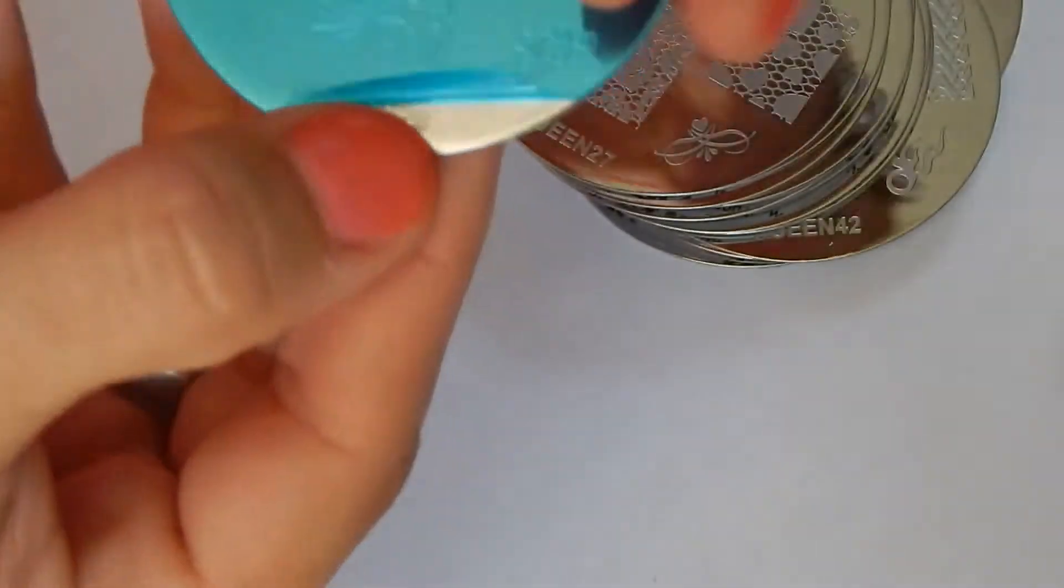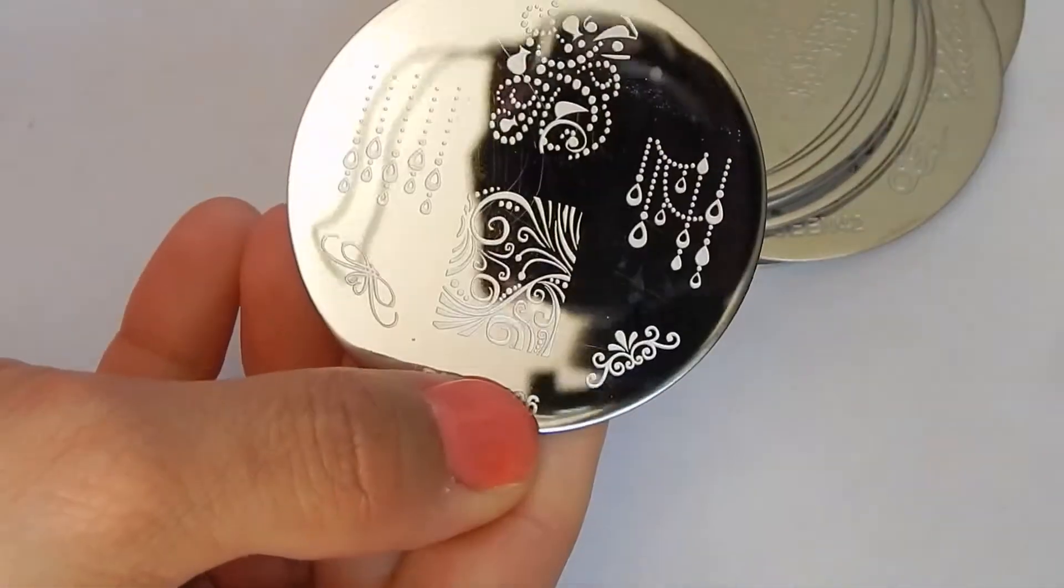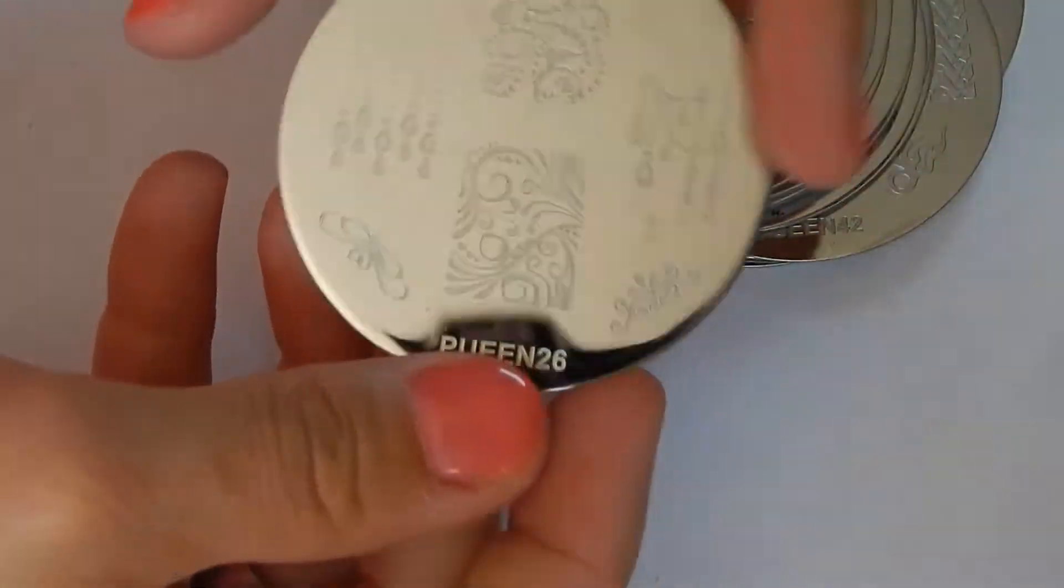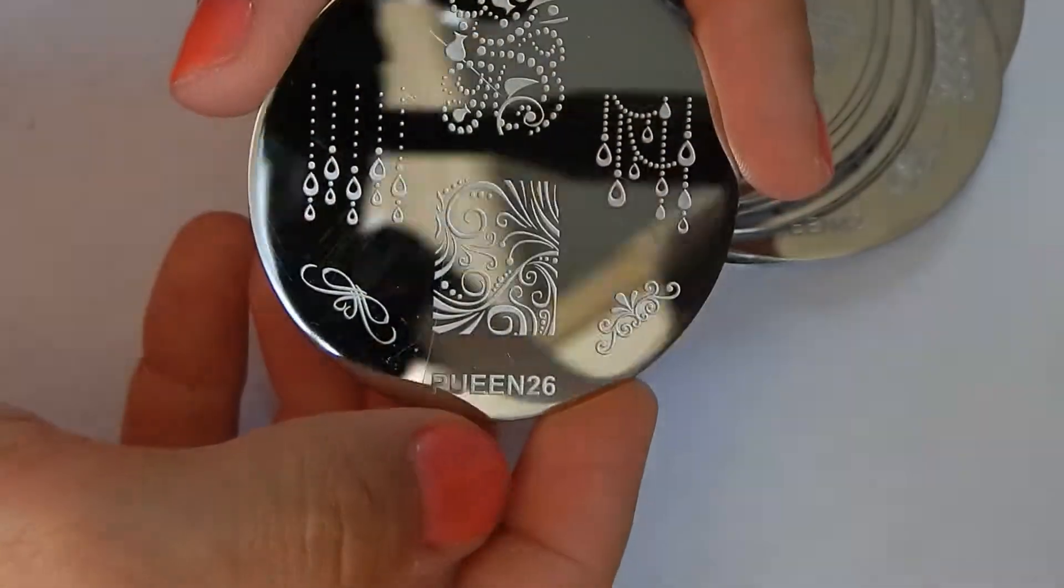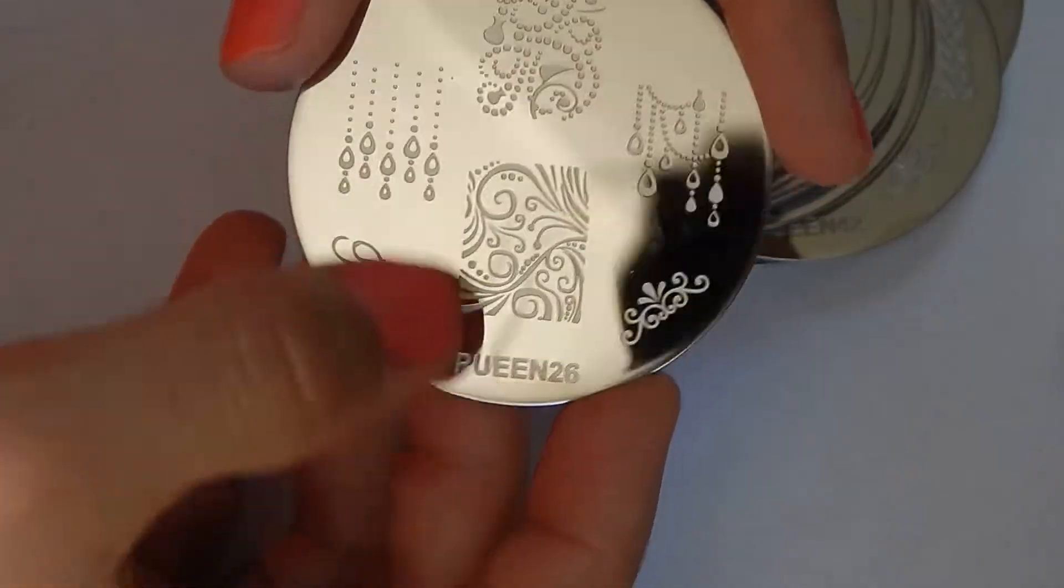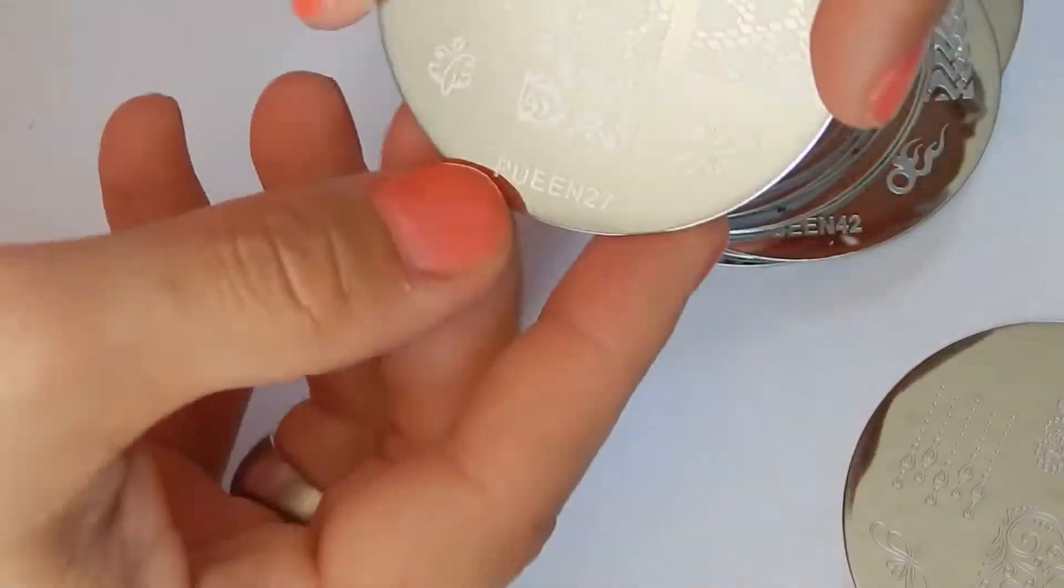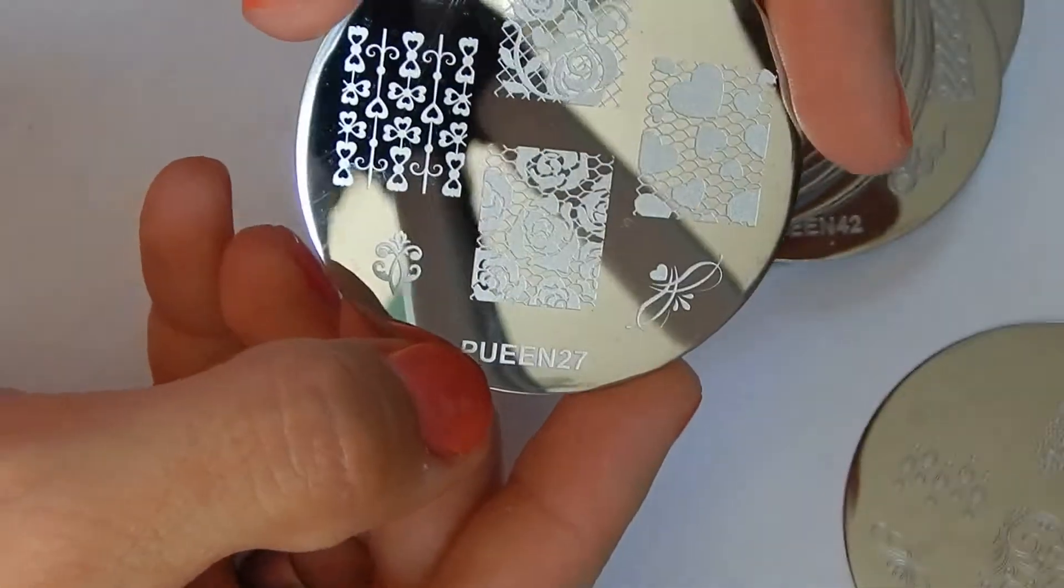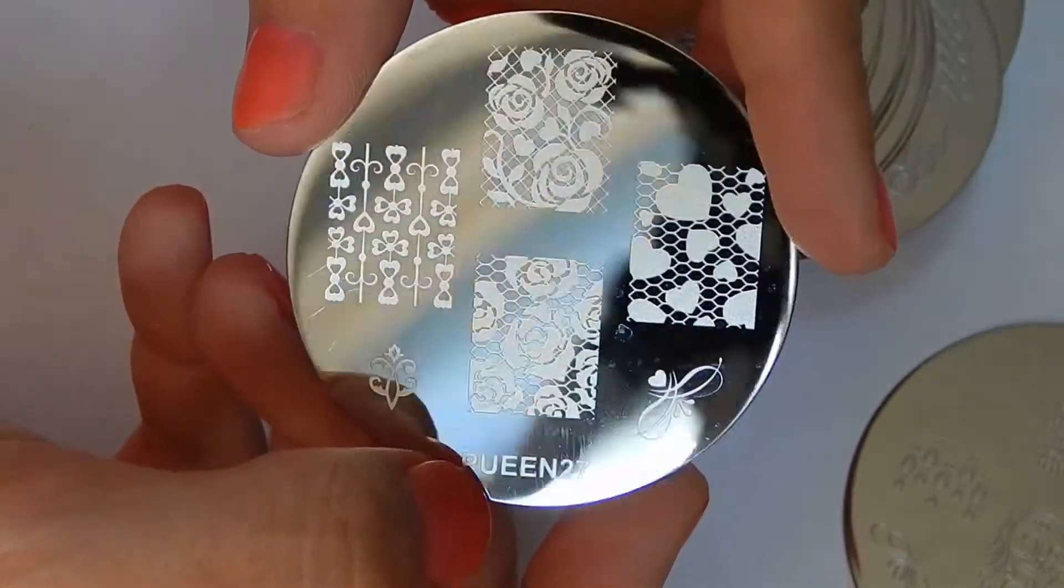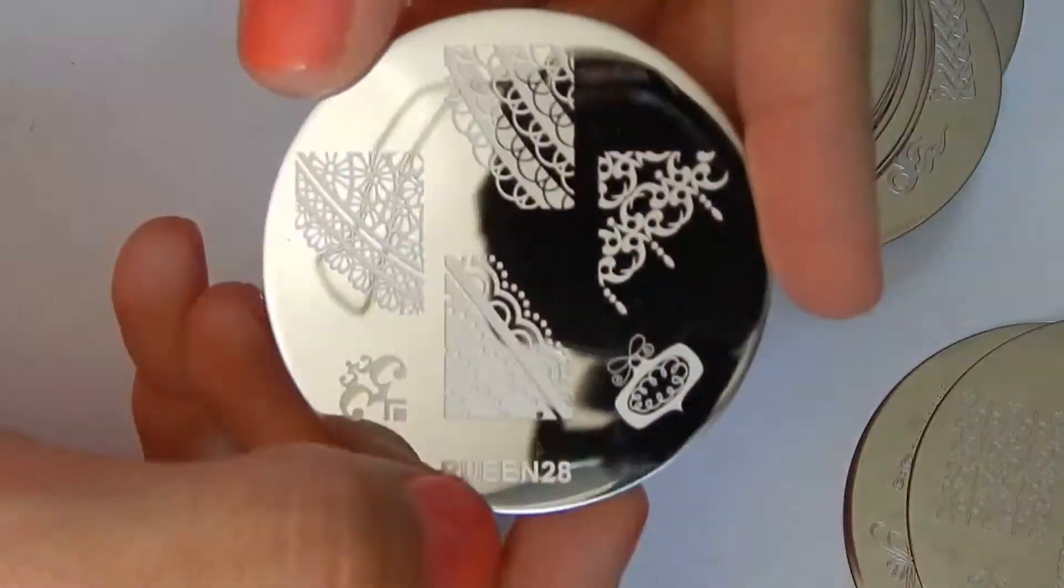This is plate 26 and you have to remove the blue liner off of it. This is plate number 26, it's got this beautiful chandelier-like look. Plate 27. Plate 28.